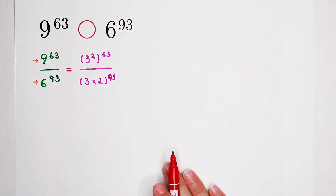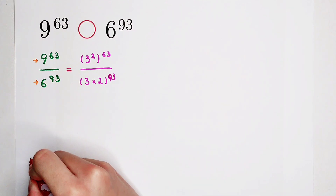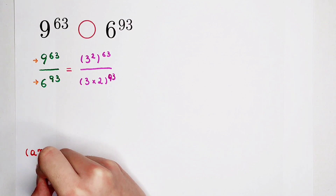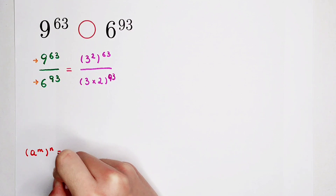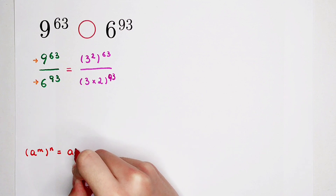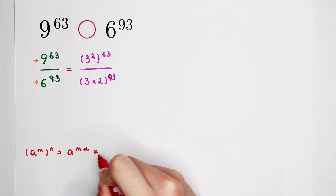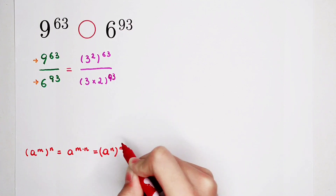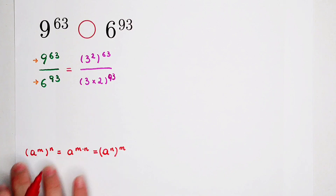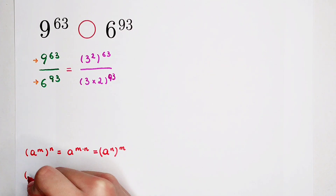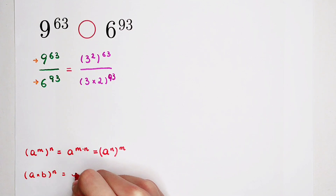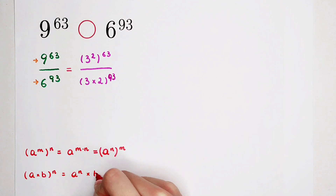I'm going to recommend these formulas. The first one: A to the power of M, also to the power of N, equals A to the power of M times N. It is also equal to A to the power of N, then also to the power of M. The second: A times B, all to the power of N, equals A to the power of N times B to the power of N.